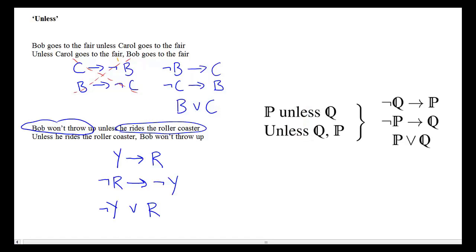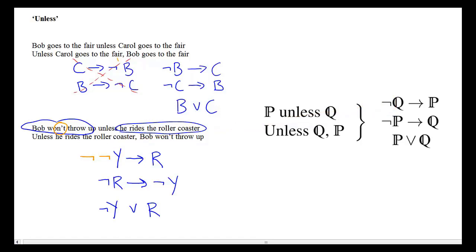For the second pair with the negated throwing-up statement: if we follow the schema exactly, what goes in the antecedent should be the original statement — not throwing up — with a negation attached. But the double negation is equivalent to no negation at all, so we don't need those two negations. Since the negation is already in the statement from the beginning, it needs to be attached in the appropriate places.